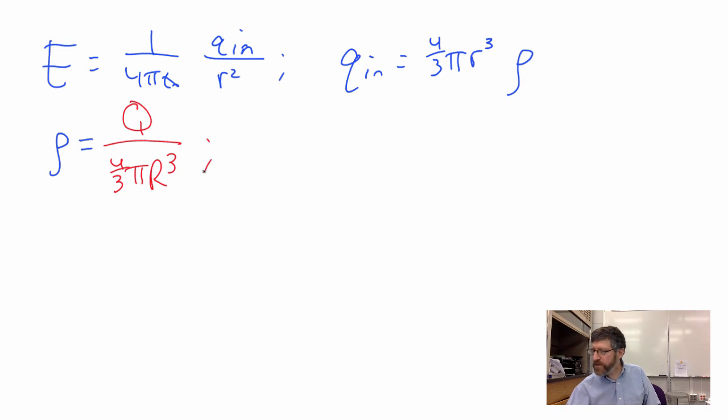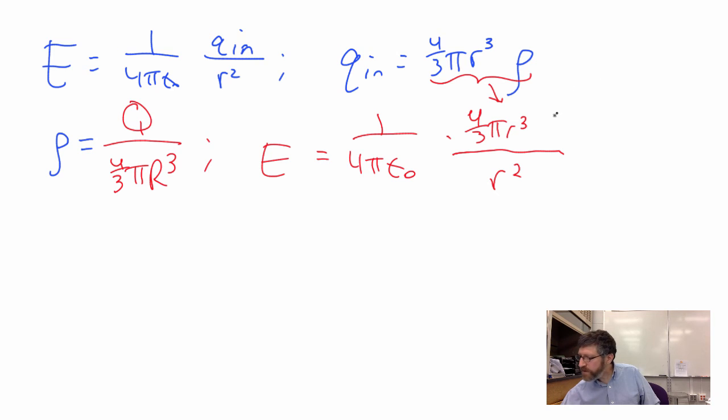Let's put it all together. Our E field is 1/(4πε₀), which is your K Coulomb constant, times Q_in, which is 4/3πr³ times ρ. For ρ, I'm taking this thing, Q over 4/3π big R³, and putting it over r² here. We're going to get nice cancellations. 4/3 gone, π gone. We've got r³ and r², cancel and leave r.